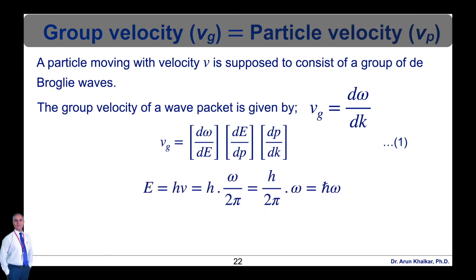As we know, E = hν = h·(ω/2π) = ℏω, where h/2π is nothing but ℏ (h-bar). Hence, we can write E = ℏω. After differentiation, we get dω/dE = 1/ℏ. This is equation number 2.